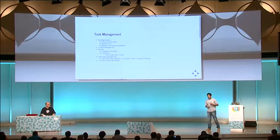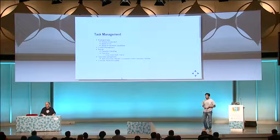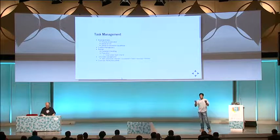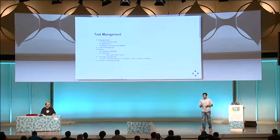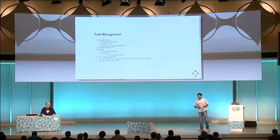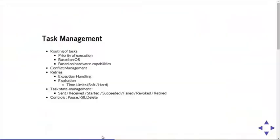For conflict management, say you push 10 messages to your queue and have 5 workers — each picks one task. You can configure Celery to process a message only once. One solution I use is to put a lock on the task using Redis: when I pick up a task, I set a lock so no other worker can pick it up. Once I'm done, I release the lock. This prevents duplicate processing.